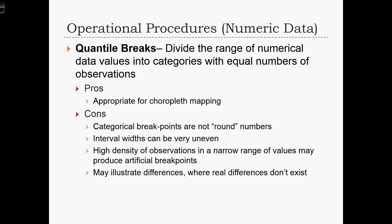We're going to divide our data such that the number of observations that end up being classified into each category is equal. This is an appropriate method for choropleth mapping, which is when we are creating color-coded maps of regions in a GIS.